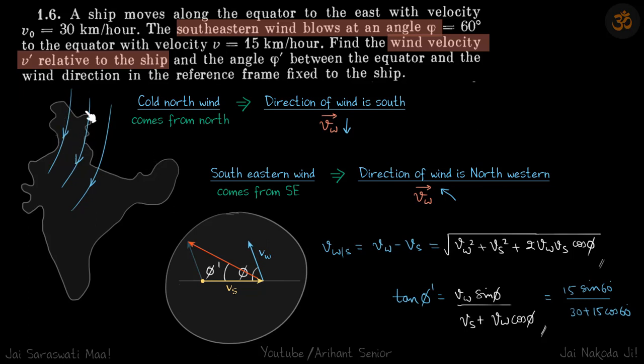Let's say we have some Himalayan cold winds blowing from the north. We would say that we have a cold north wind, which means the wind is coming from the north, which implies the direction of wind itself is towards south.